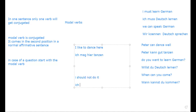We have the six modal verbs: können, müssen, wollen, sollen, mögen, möchten. For example, 'I should not do it': 'ich' is the subject, 'sollen' is conjugated as 'soll', and the second verb goes to the end without being conjugated. The sentence structure: 'Ich soll... nicht... machen' — 'soll' is conjugated, 'machen' goes to the end.